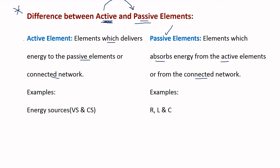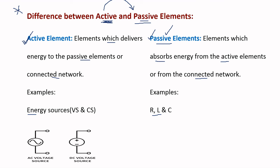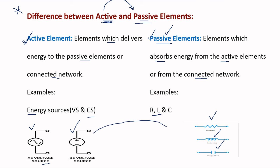All energy sources are examples of active elements — including AC and DC voltage sources as well as current sources. RLC elements — resistors, inductors, and capacitors — are examples of passive elements. The active elements deliver energy and the passive elements absorb that energy from the active elements.